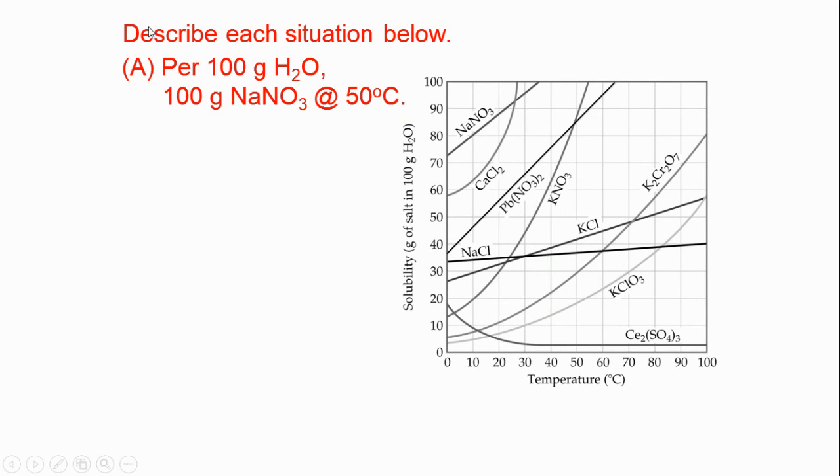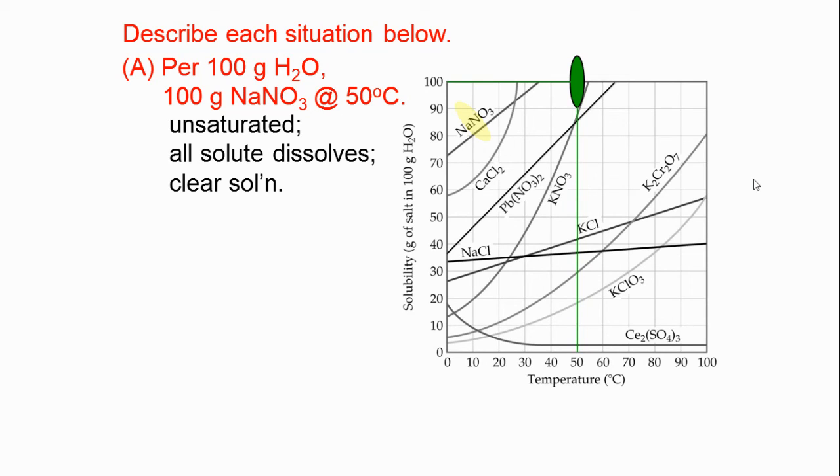Let's try another one. Now it says we have 100 grams of water. That's good. That means we don't have to worry about multiplying by anything. And we have 100 grams of sodium nitrate at 50 degrees Celsius. I went to 50 degrees Celsius and I made a dot where they intersected at 100 grams up here of sodium nitrate. Now I found the sodium nitrate and I'm clearly below that point so this is an unsaturated solution. So I would anticipate all of the sodium nitrate would dissolve in 100 grams of water at 50 degrees Celsius.